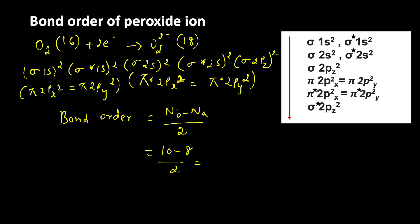So 10 minus 8 divided by 2 is equal to 2 divided by 2 equal to 1. So bond order of peroxide ion is equal to 1. Thanks for watching.